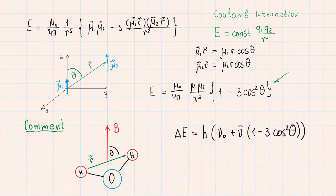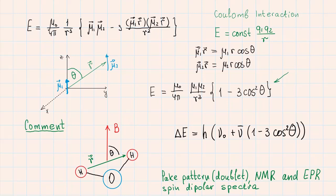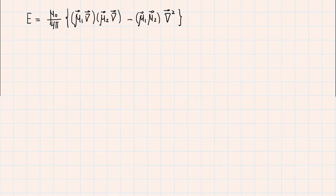By the way, there is another my video describing the spectra of the system if they emit photons with frequency given by such formula. This video is called Pake pattern doublet in NMR and EPR spin dipolar spectra. Now, I would like to go back to the point where I derived this expression for the energy and assumed that the distance r is larger than zero.